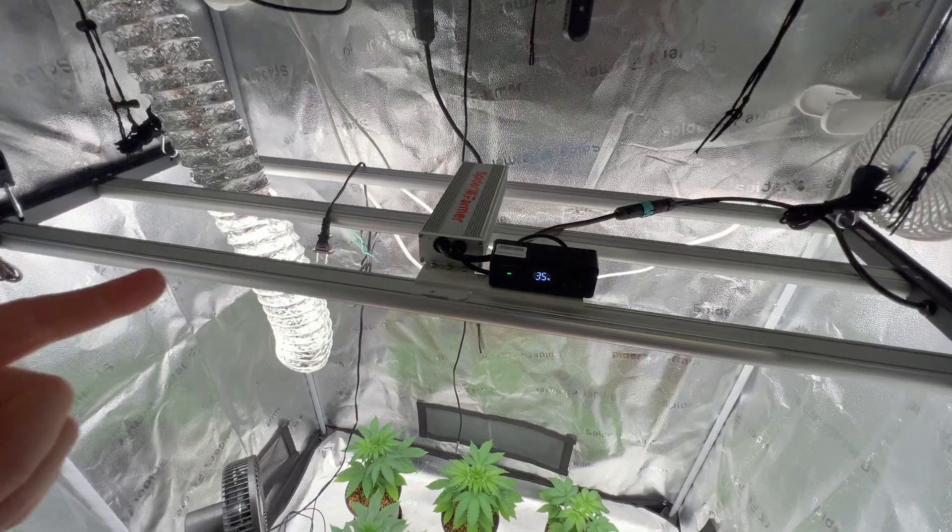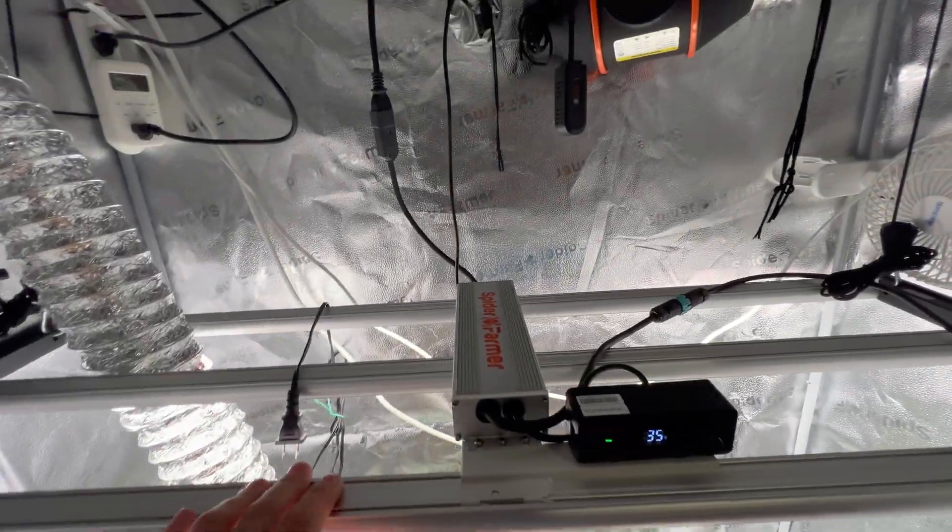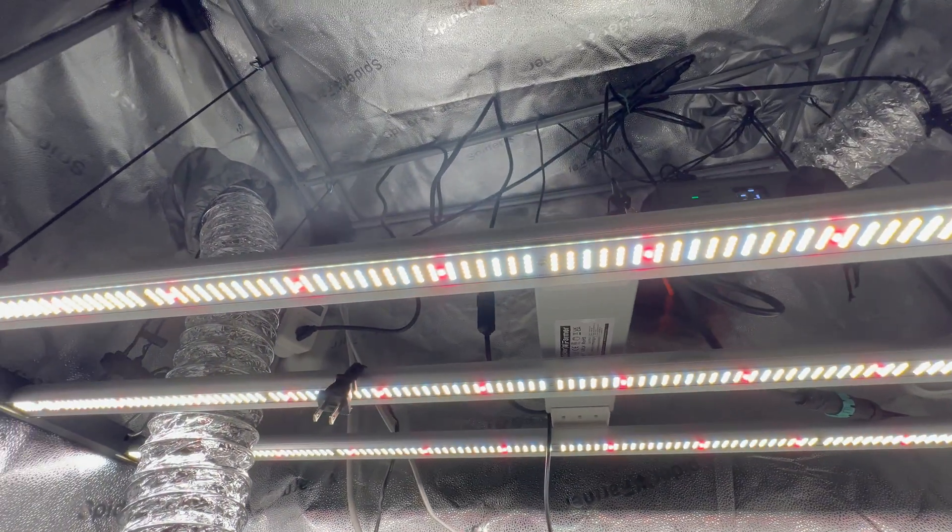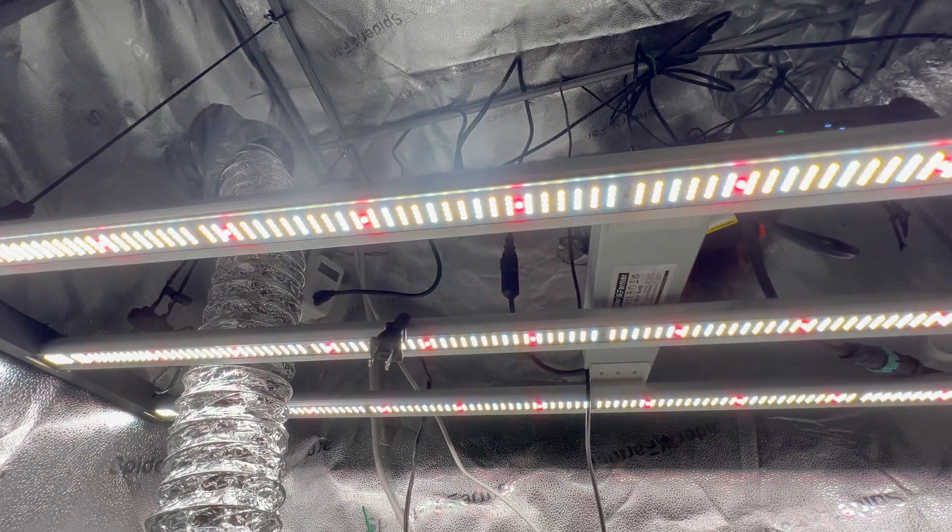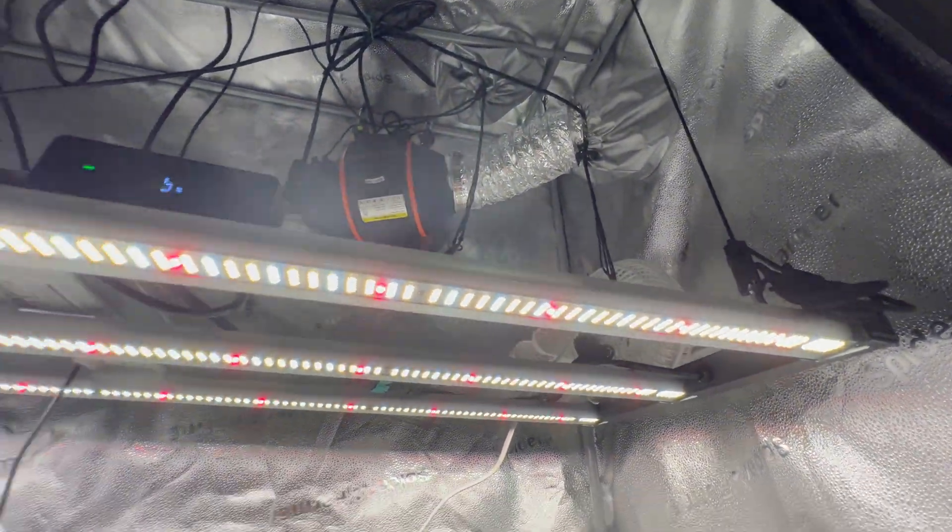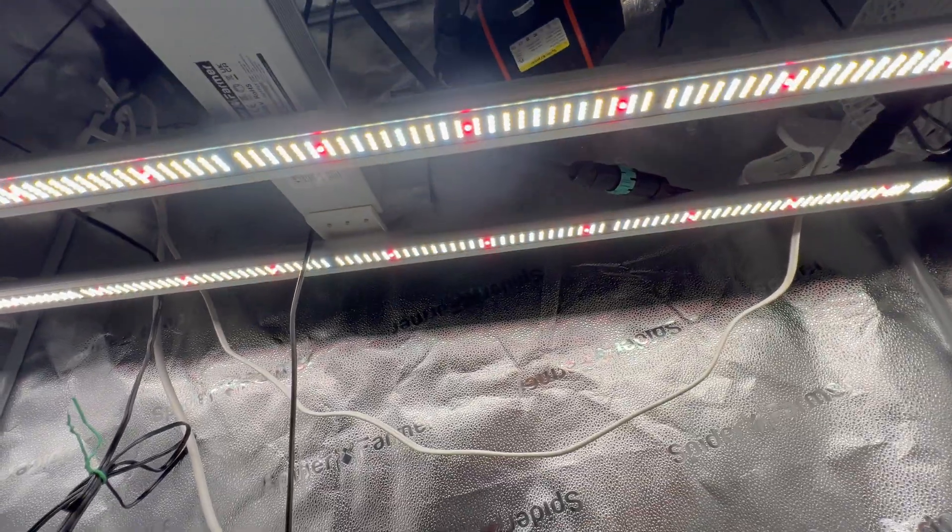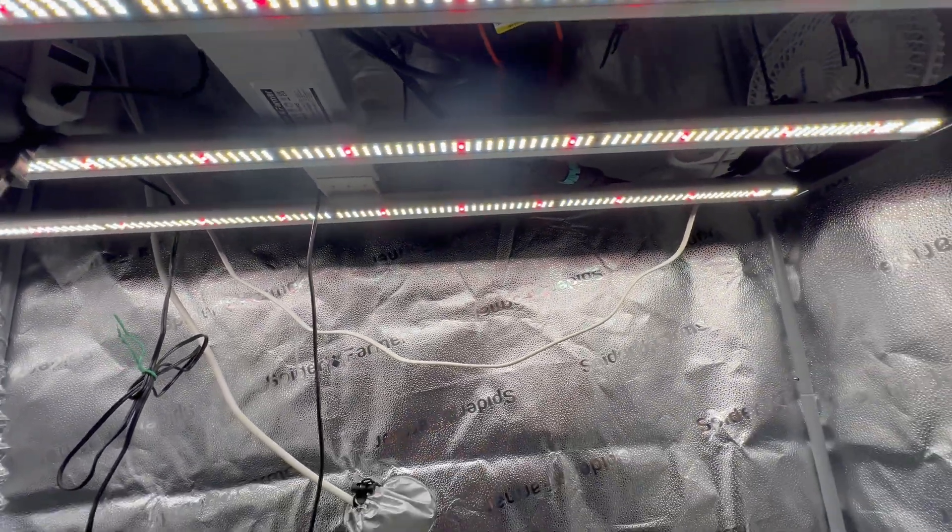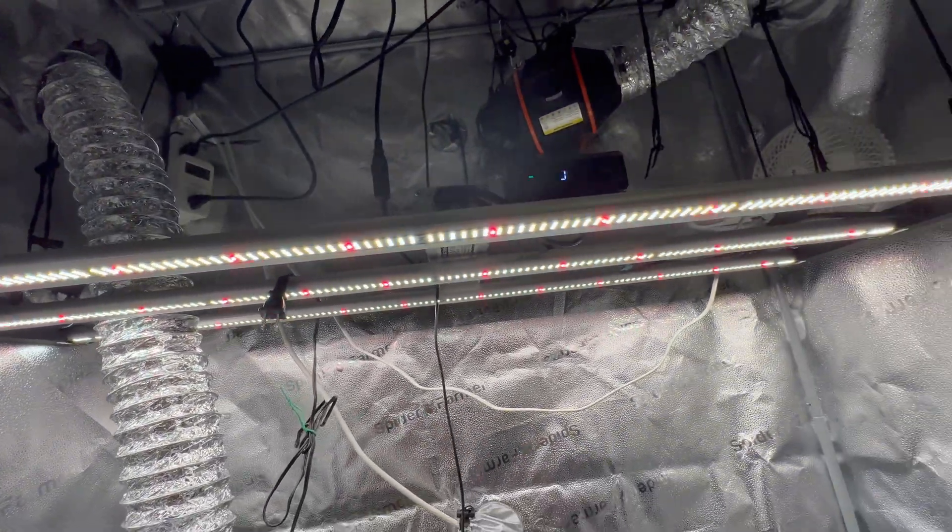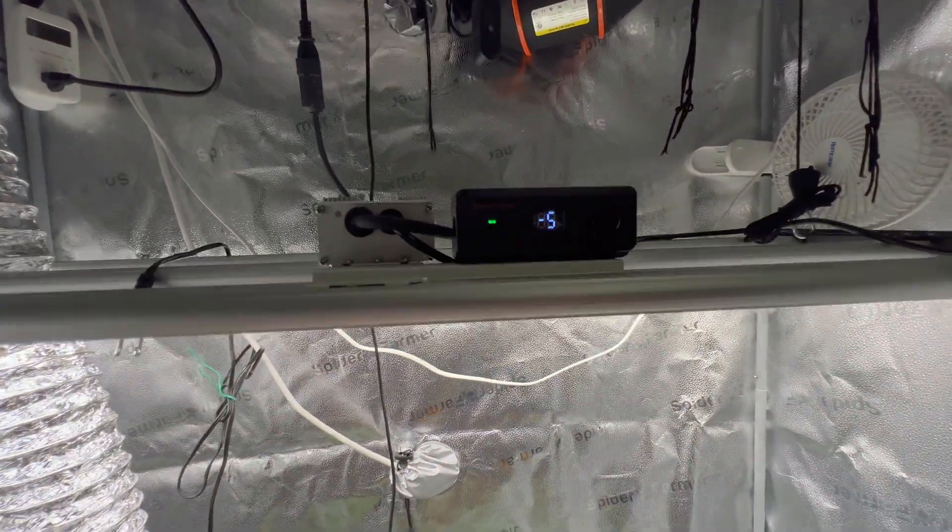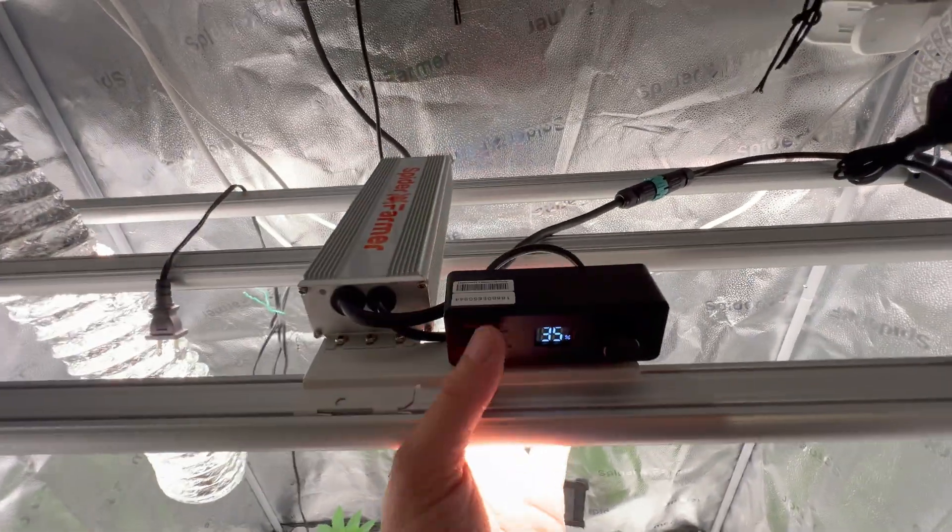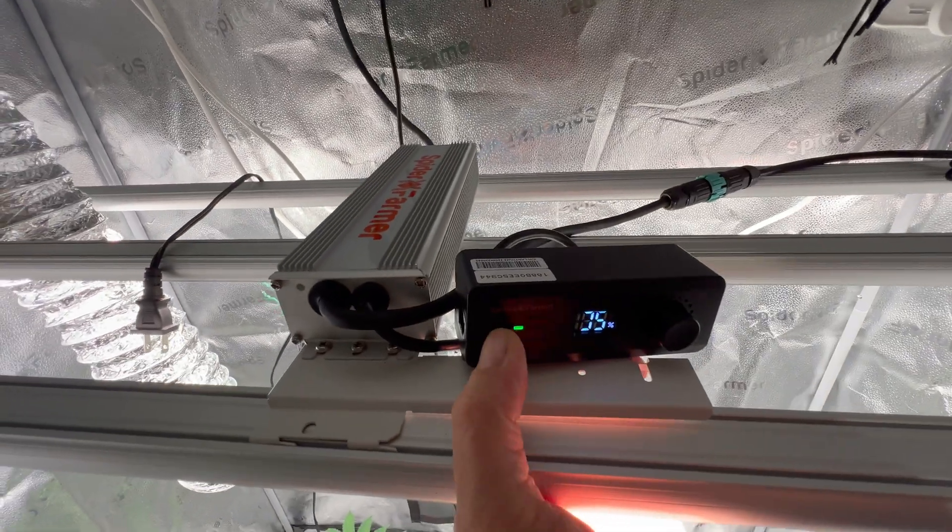This beautiful light right here is the G4500 from Spider Farmer. This is the three bar bar style light that is meant for 2x4 tents, practically side to side coverage. You might be losing two inches on the front and two inches on the back but other than that you do have a bar style light that will work for your 2x4. This is a better look at the new location for the dimmer itself and you can remove the dimmer from its location if you need to or want to.